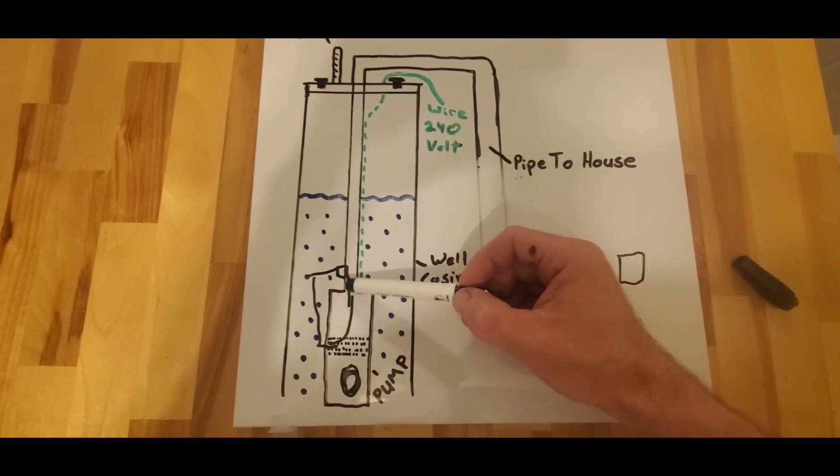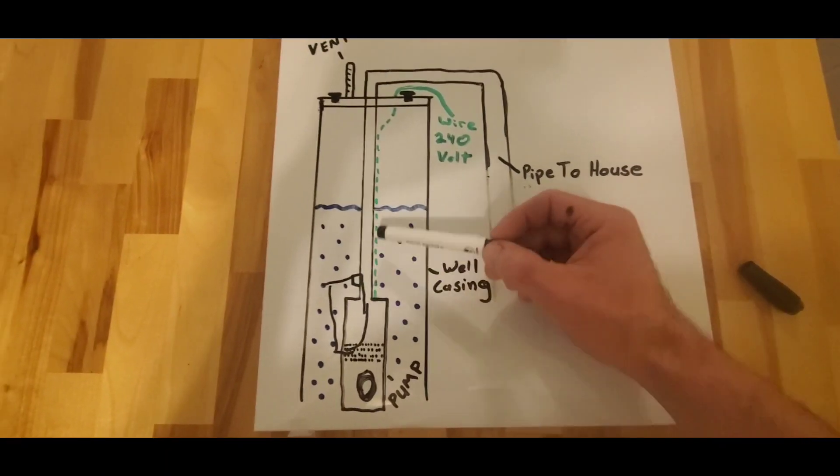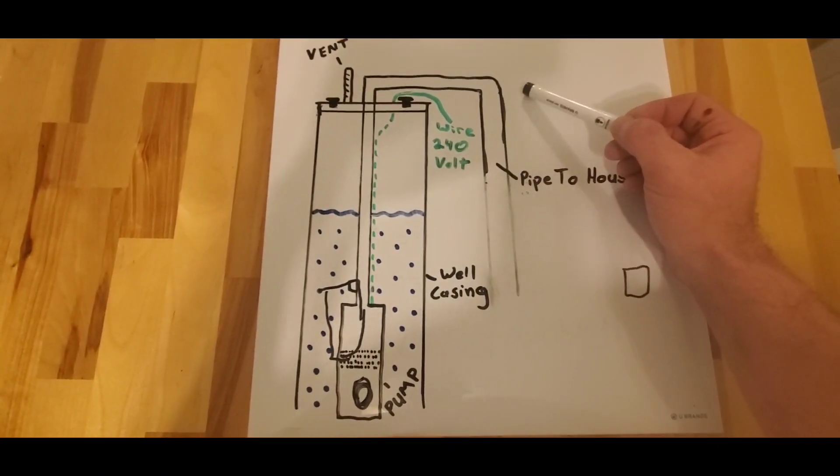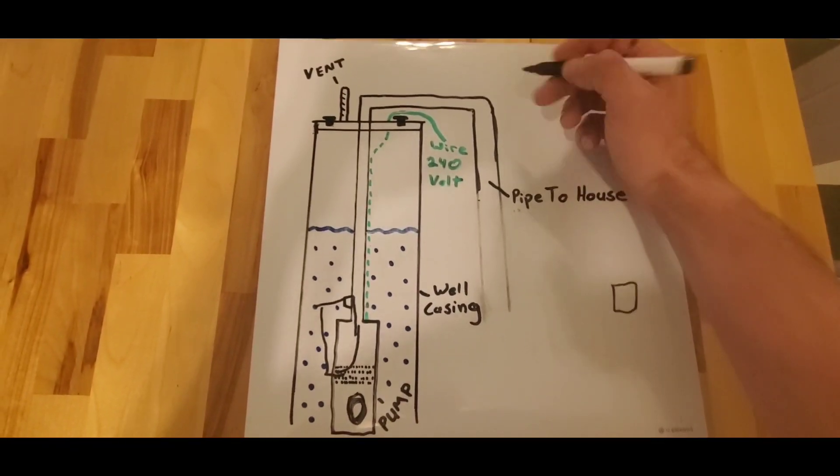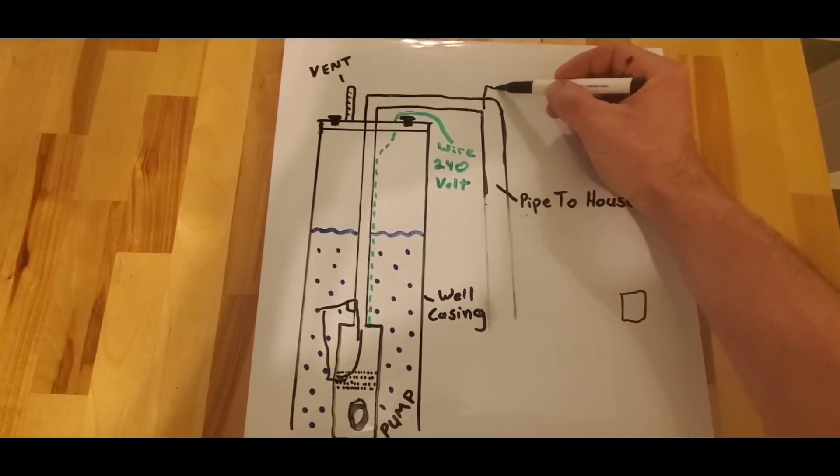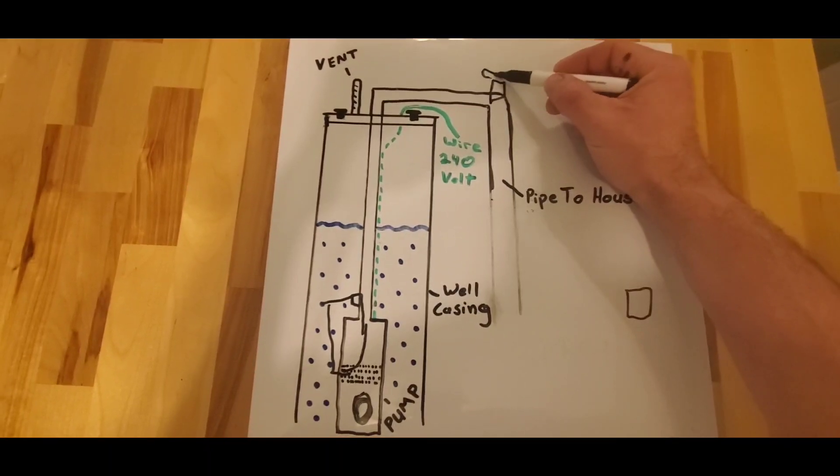I've seen it time and time again. So what happens is if you were to turn the breaker off and open a drain at the tank, or if you actually have a spigot right here that you can hook your garden hose to.